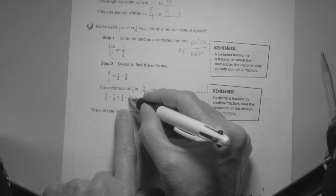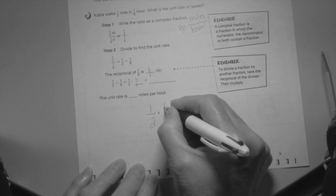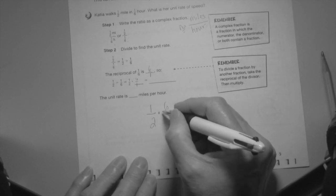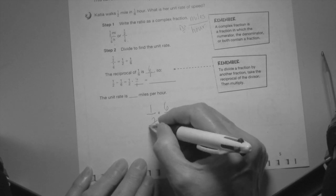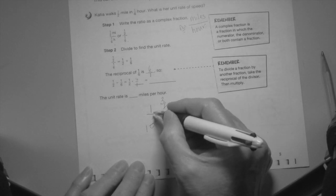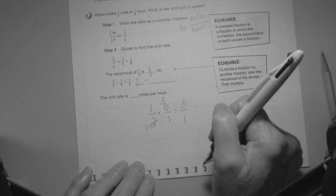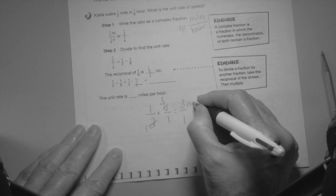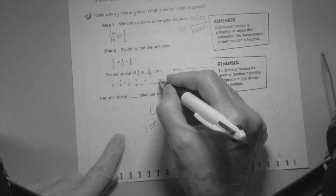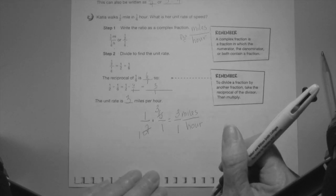One half divided by one sixth is one half times six over one. One half times six over one, we can simplify here to make life a little easier. Two and six, two can divide into six. I'm going to simplify two into two once, how many twos are in six? Three. Now straight multiply across the top. Three times one is three, and on the bottom I have one. So the answer here is three miles per hour.